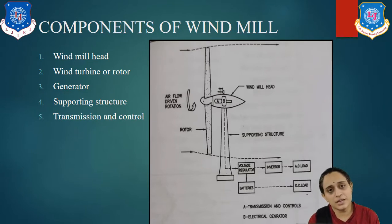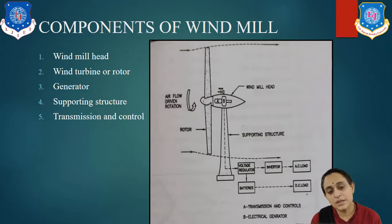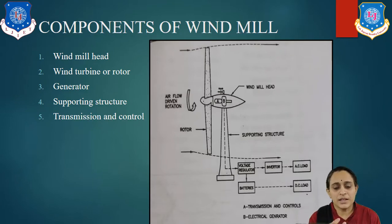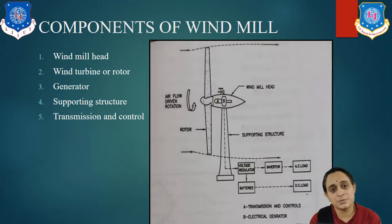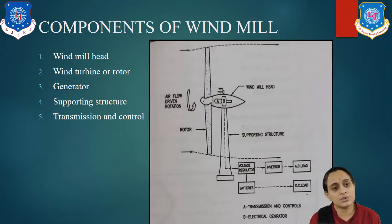There are different types of supporting structures like a tower, tubular steel, or a frame-like structure, and many more. Now, transmission and control is also very important equipment. Part A, as you see in this diagram, indicates the transmission — it means speed increases and includes a driving shaft, clutch, and coupling. This is the transmission and control.